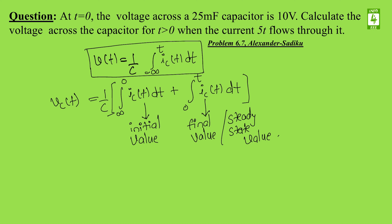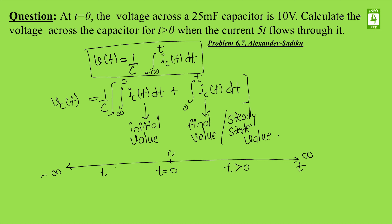On the time axis, this is your zero point, this is your positive infinity, and this is your minus infinity — also called the time axis. t = 0 is the reference point; t greater than 0 is to the right, and t less than 0 is to the left.